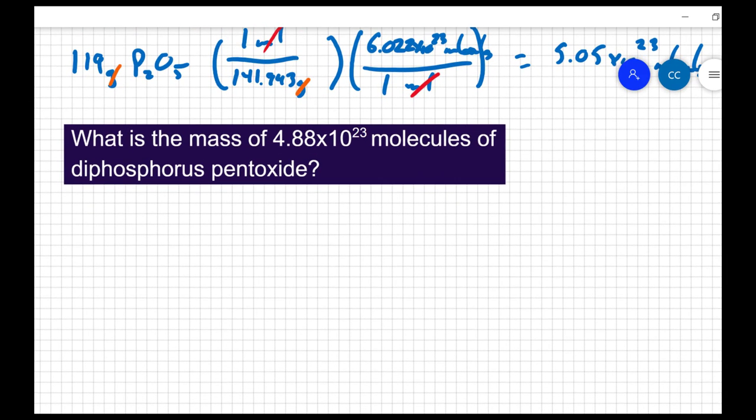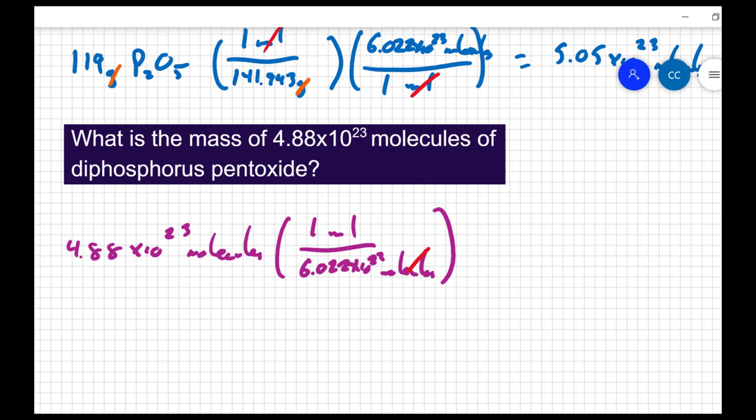This time I'm starting with 4.88 times 10 to the 23 molecules. I'm going to convert to moles and I'm going to use Avogadro's number. One mole for every 6.022 times 10 to the 23 molecules. Molecules cancel.